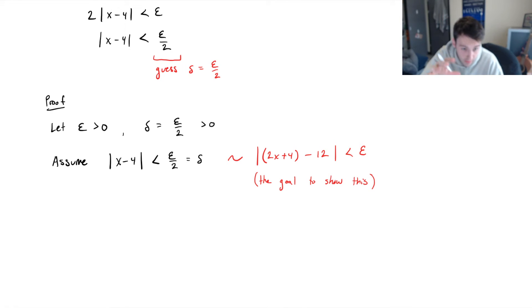So we've made a guess for delta. We're going to make this assumption. And using this assumption, we're going to hope to show that if this is true, then I can show that f of x minus L, which is 12, is less than epsilon. So if that assumption is true, then I can show this. And hopefully, we can show that it's true. If it is, then we're done.